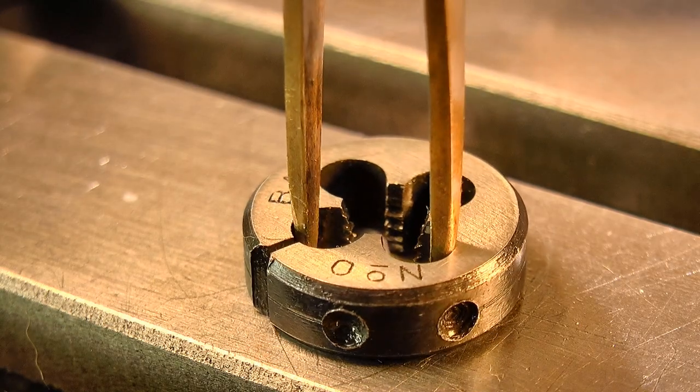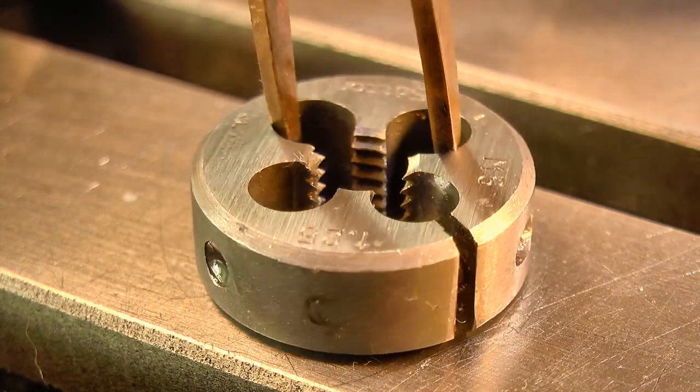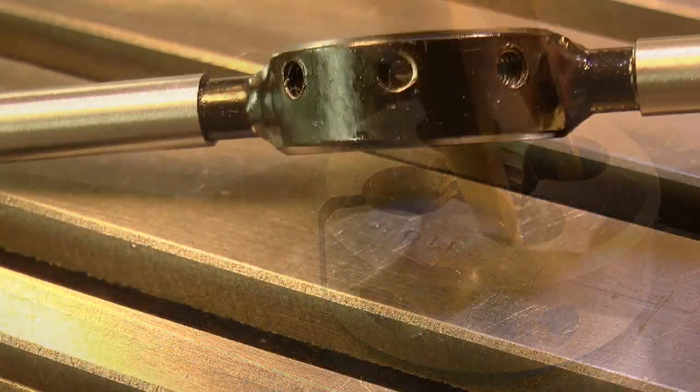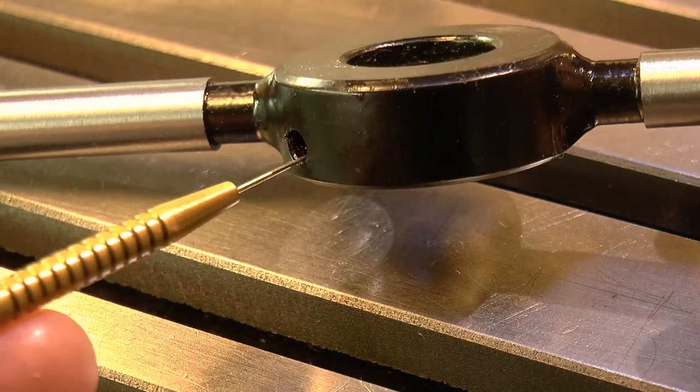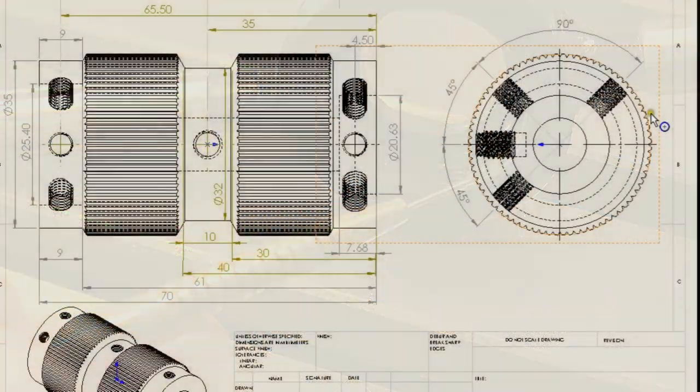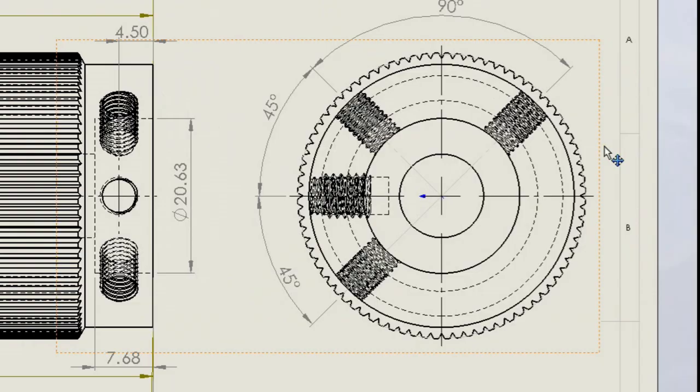I also need to consider the different dimple patterns that are found on modern split dies. I think this little holder deals with it best. It has 4 holes spaced to both open or compress any common split die. The 45 degree spacing takes care of some, and the 90 degree spacing sorts out the rest.